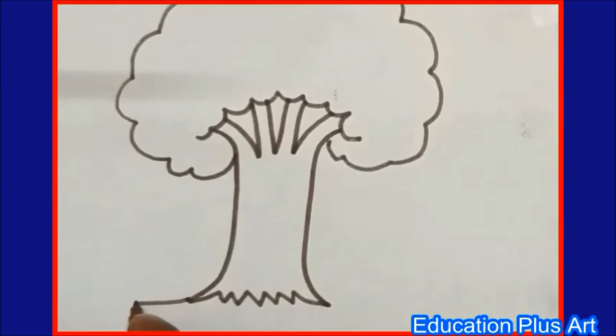One slanting line going towards downside, one slanting line going towards downside. This is the land. Here my tree is finished.